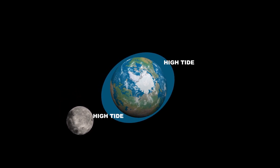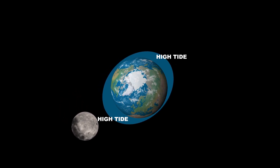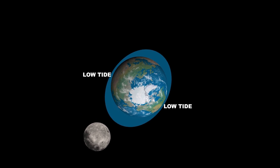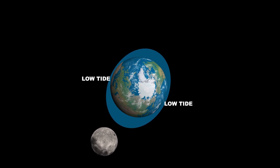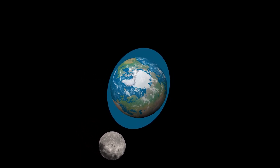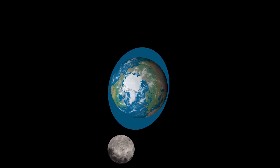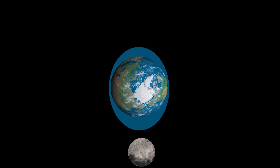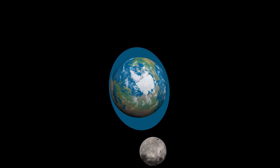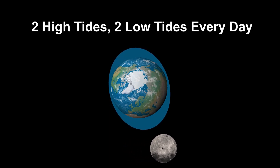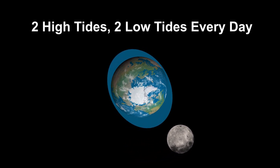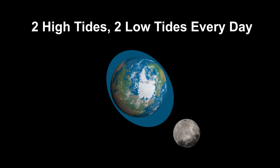The two big bulges are the high tides, and the two side bulges are the low tides. Because this bulge goes around the Earth every 24 hours, that's why there are two high tides and two low tides every day.